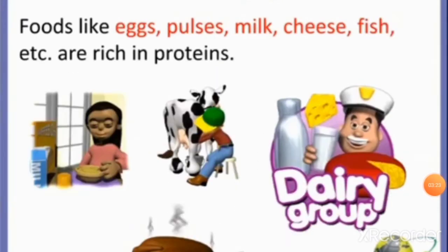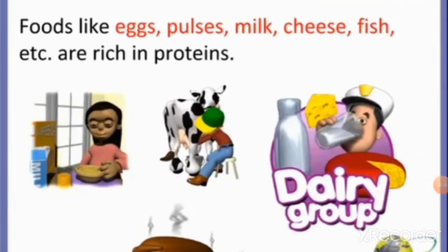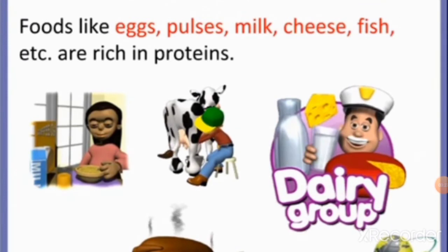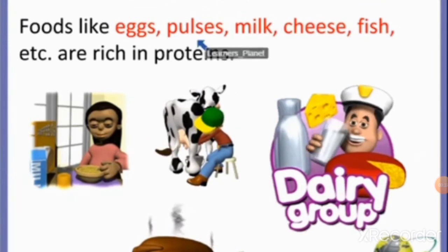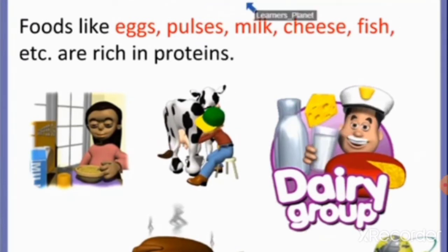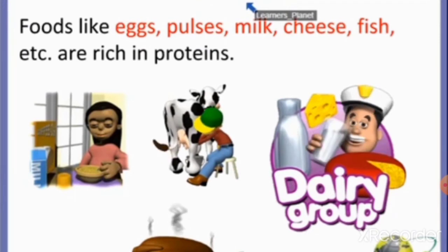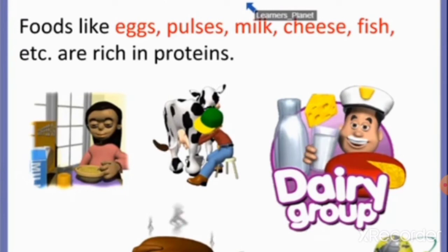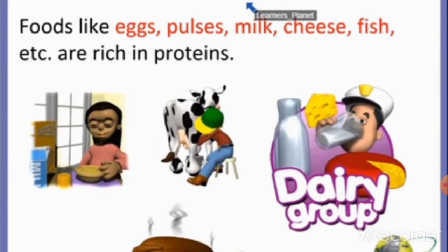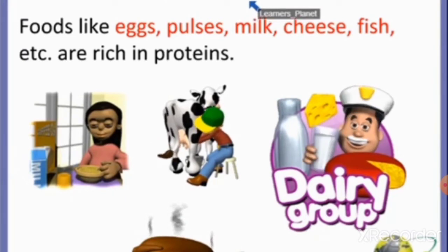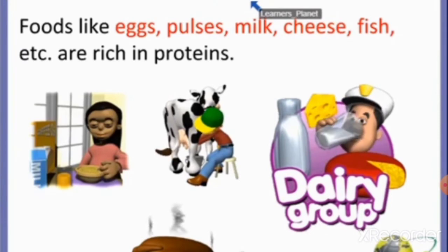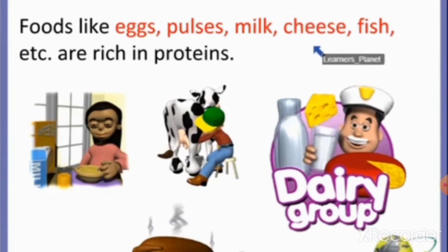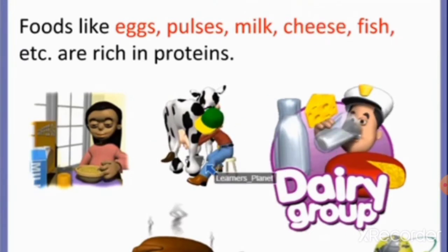Food items such as milk, egg, cheese, fish, meat, beans and pulses are rich in protein. Food items rich in proteins are called body-building food. They are needed for the growth and repair of our body and also for building muscles.